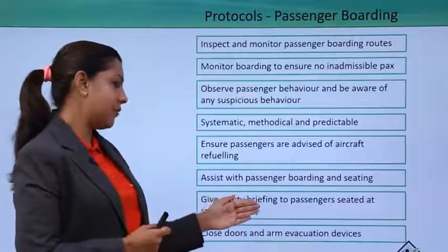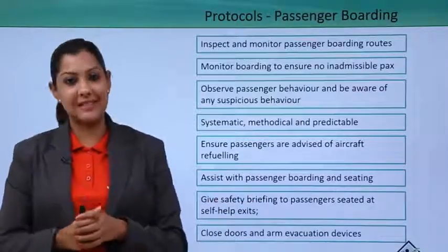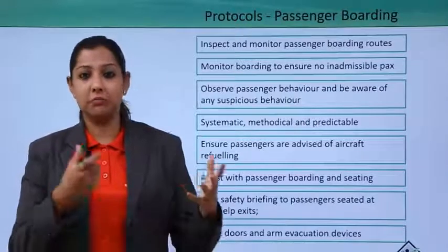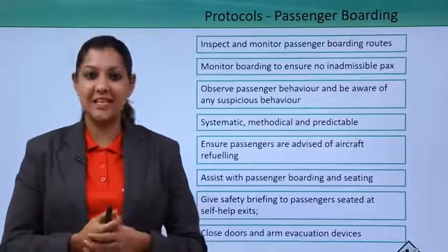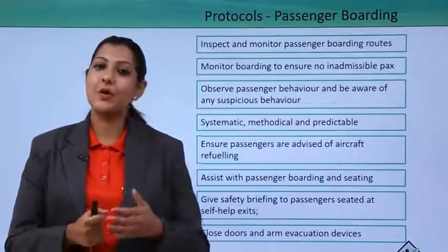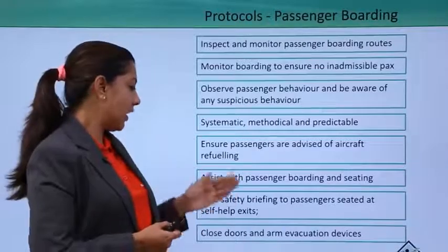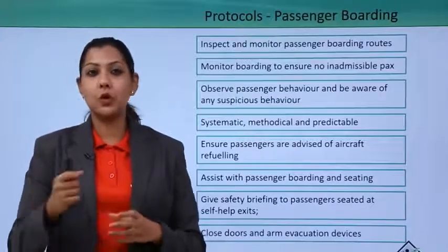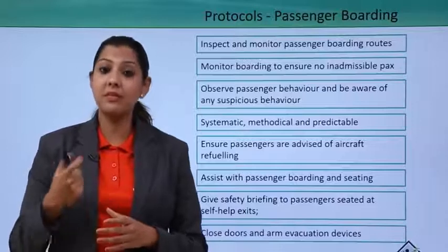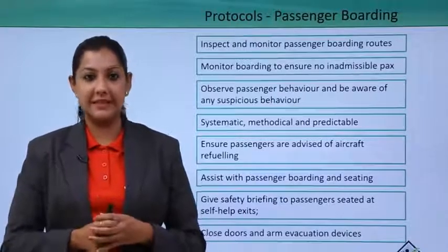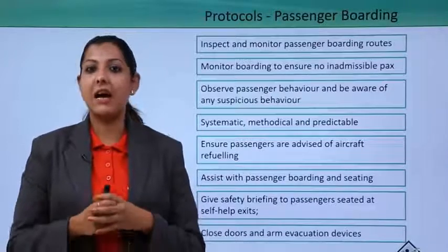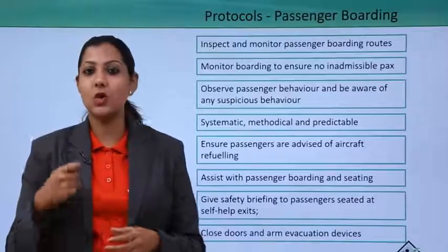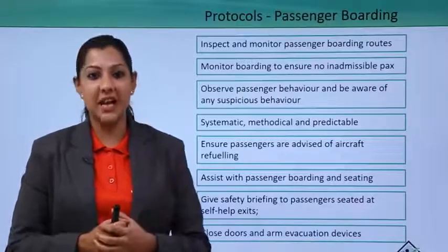Safety briefings must be given to passengers seated at the emergency exit row area — those at the wing exit need to be briefed on how to open the exit in case of evacuation or emergency. Crew must then close the doors and arm the evacuation slides. It is important that crew know how to close aircraft doors properly and arm the slides so they deploy correctly in an armed position.